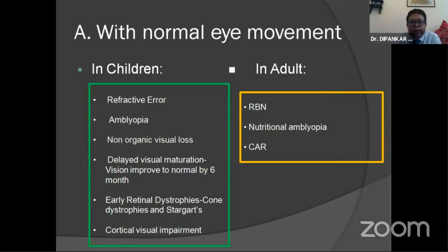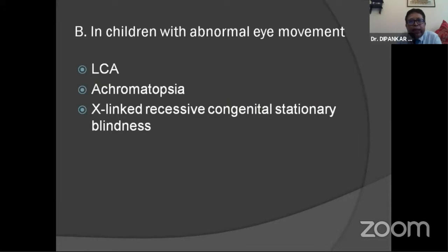Cortical visual impairment can sometimes present like this. In adults, retrobulbar neuritis with MRI imaging and visual field changes can be seen. Nutritional amblyopia and paraneoplastic disease — either cancer-associated retinopathy or melanoma-associated retinopathy — can cause low vision with normal fundus. In children with abnormal eye movements, Leber congenital amaurosis can present with clinical signs such as eye poking and rotatory nystagmus. Achromatopsia and complete congenital stationary night blindness can also pose this problem.